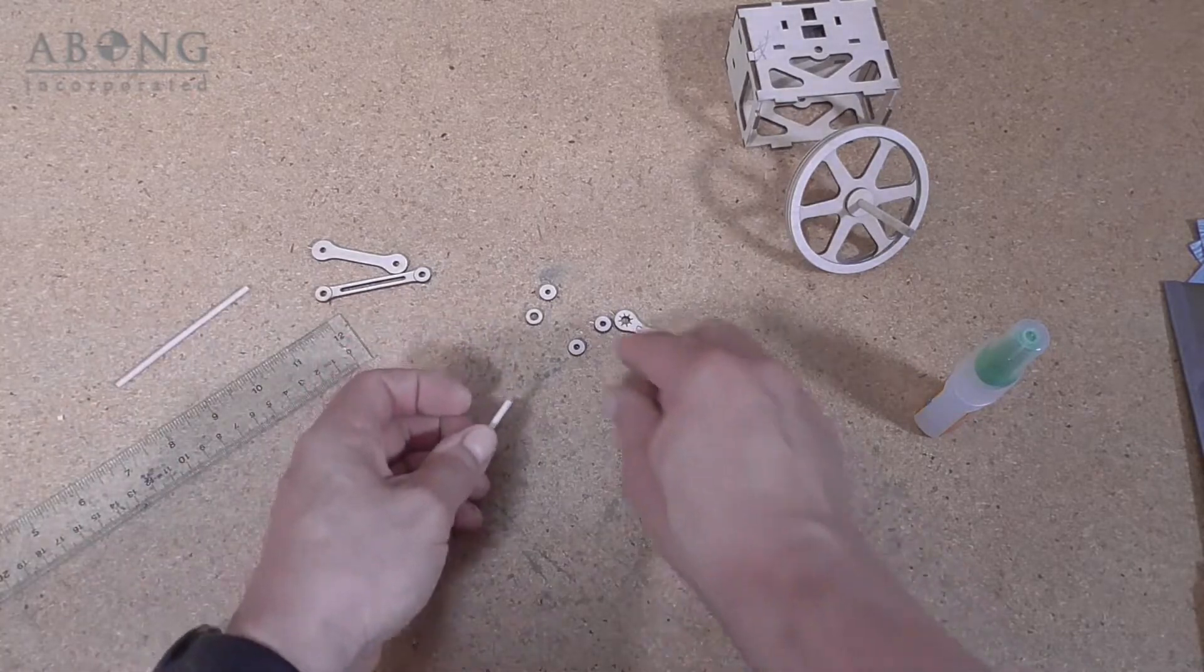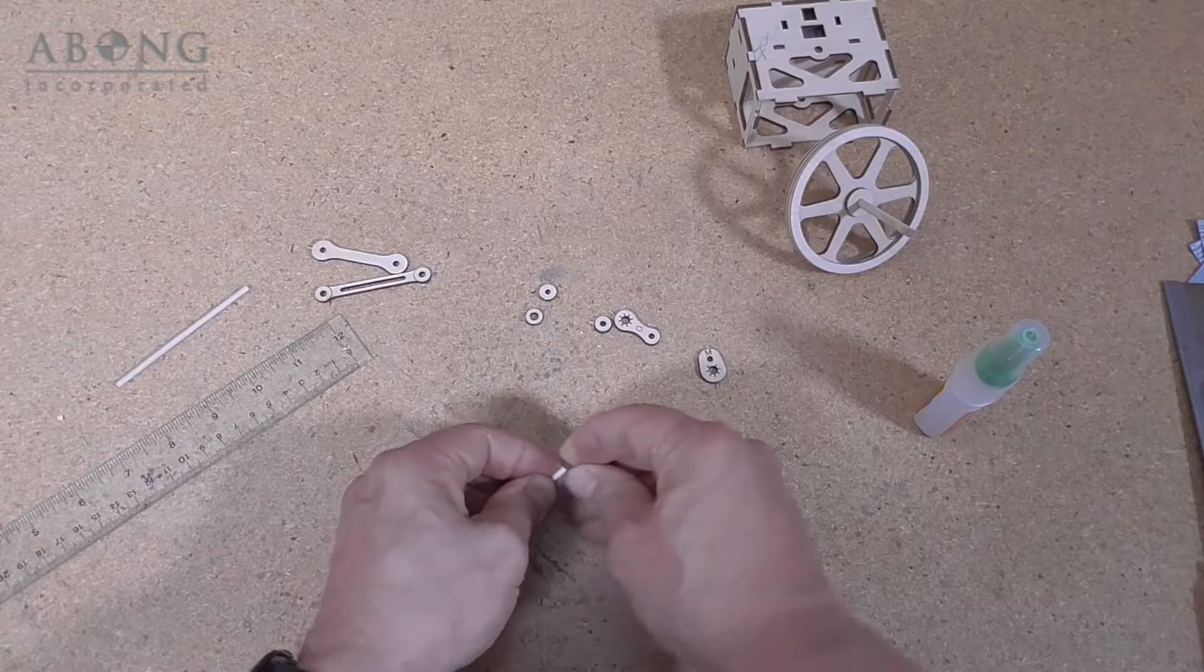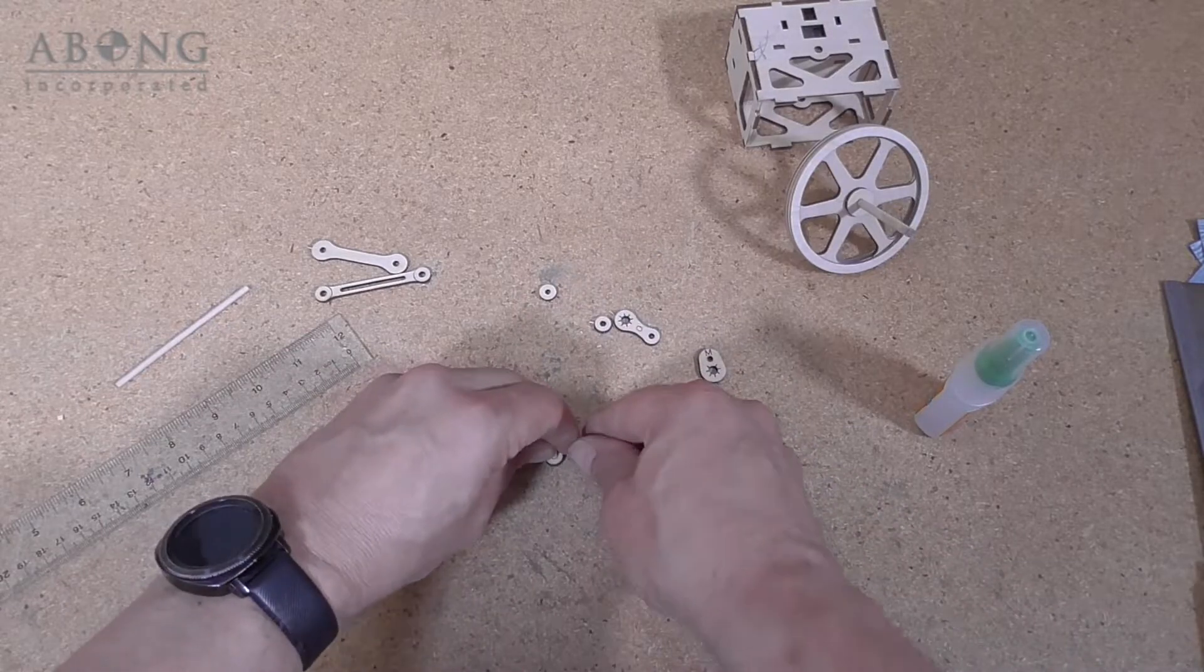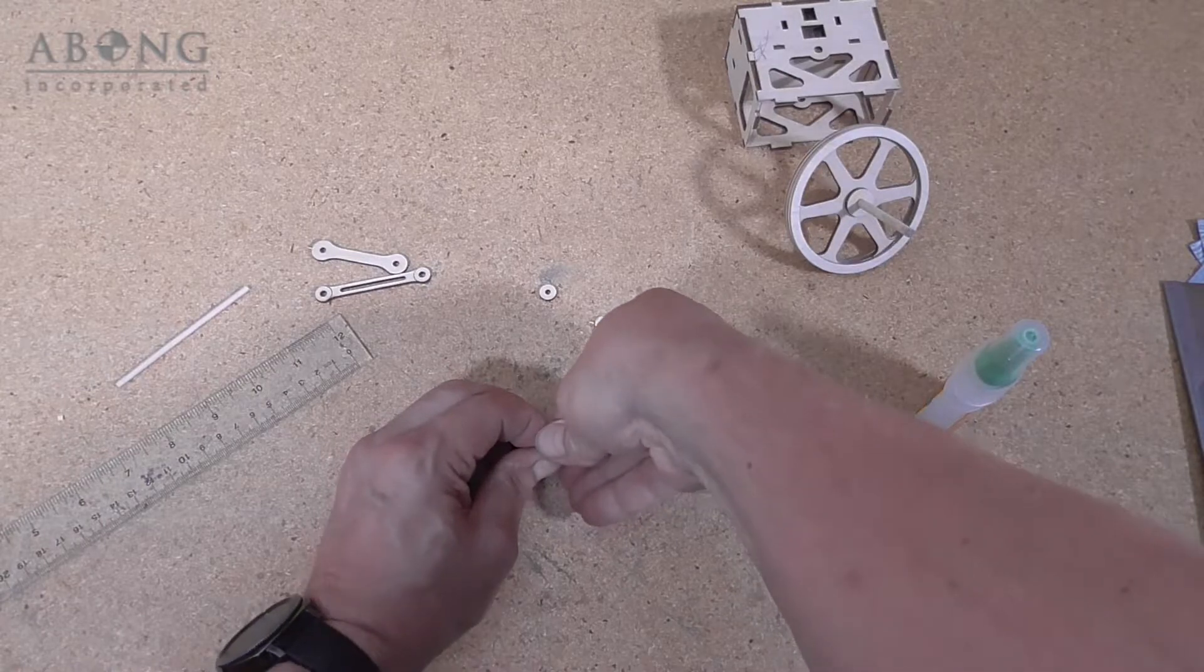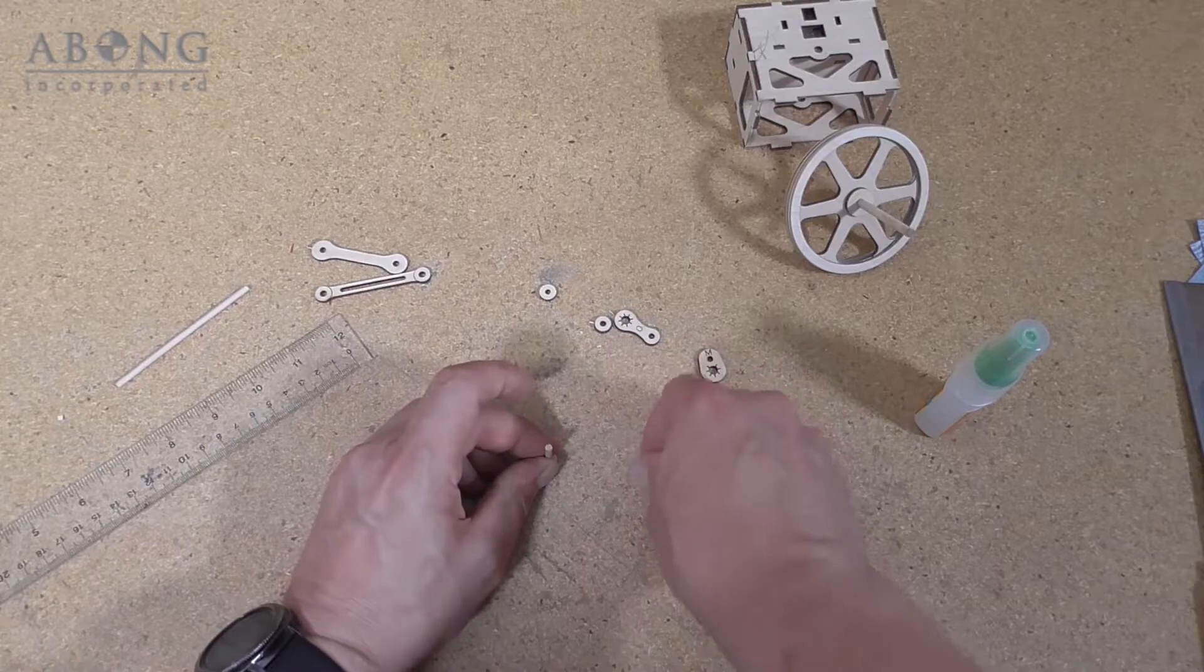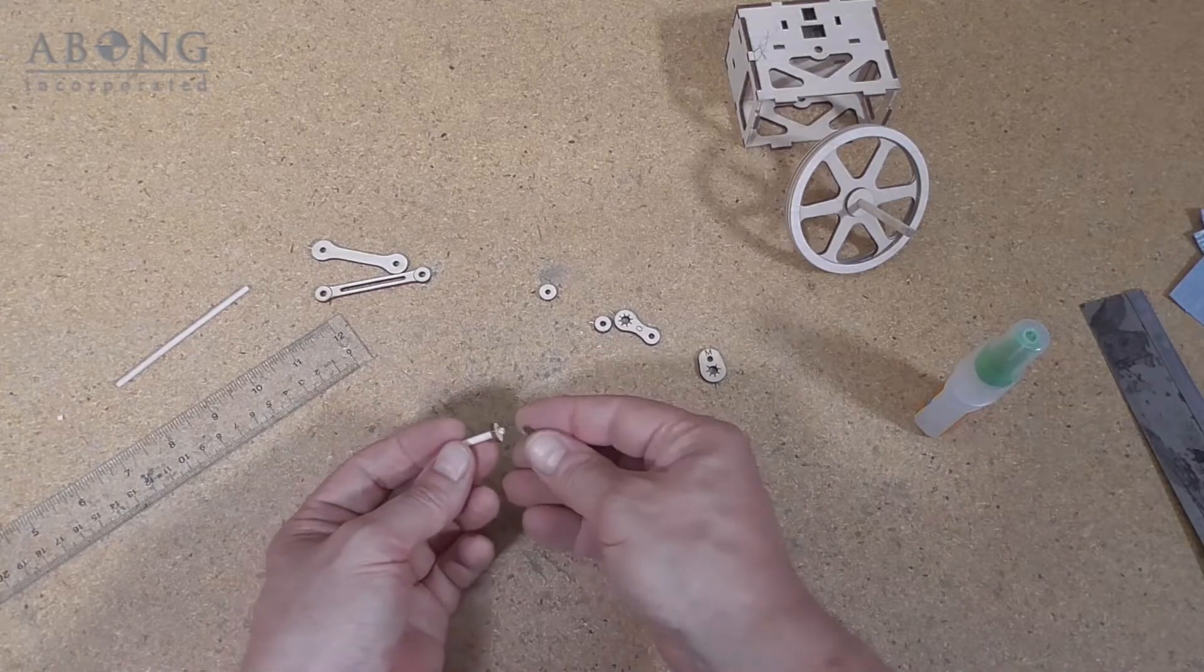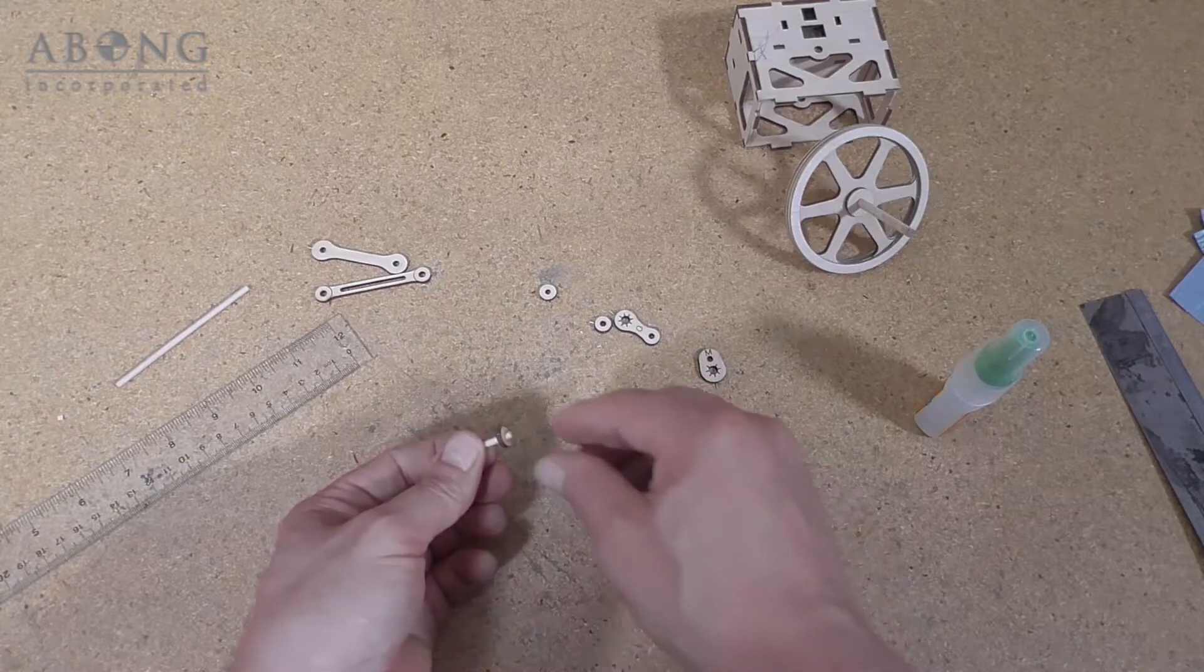What we're going to do with this piece is we're just going to press it onto one of the L pieces. And we're going to use this as a guide to press it through. So we want it to be pressed through by about the thickness of one piece of plywood. You can see there.